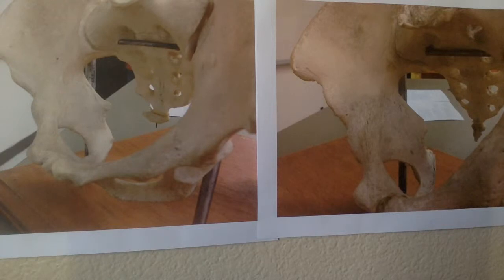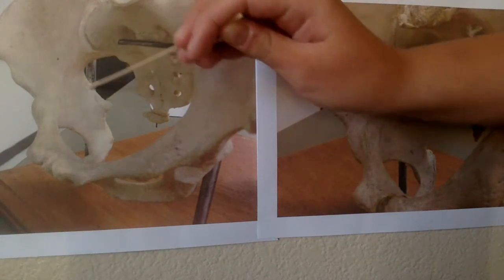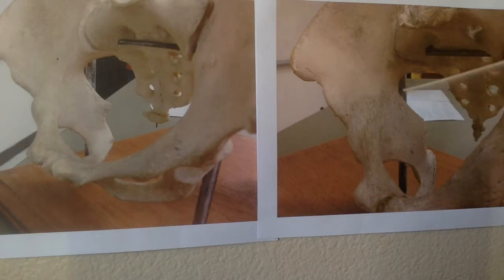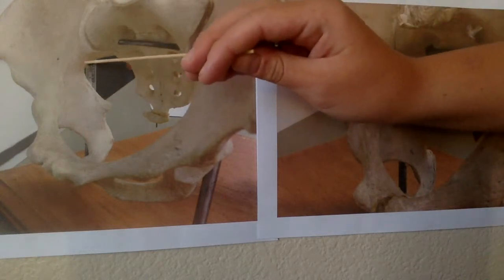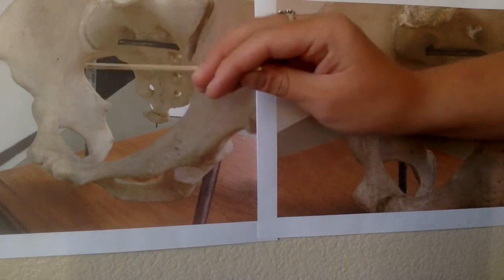There is also a difference in the angles of the greater sciatic notch, which is found on the spine of the ischium. The greater sciatic notch of the male ischium has a smaller angle at less than 45 degrees, while the greater sciatic notch of the female ischium has a greater angle than 45 degrees.